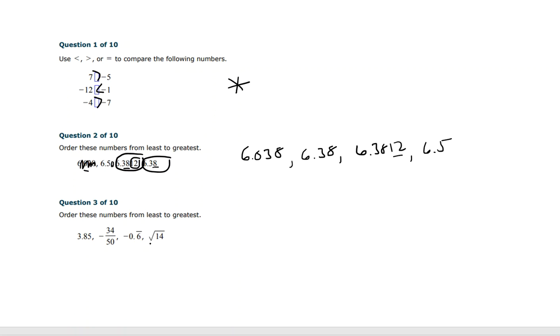On the next one, order these numbers from least to greatest. We have some decimals, we have some fractions, we have some repeating decimals, we have a square root. I'm just going to tell you the square root of 14 is approximately 3.74 positive. Remember, square root of 14, this would be an example of an irrational number. It actually has a never repeating, never ending decimal when I stick that in the calculator. None of these repeat.